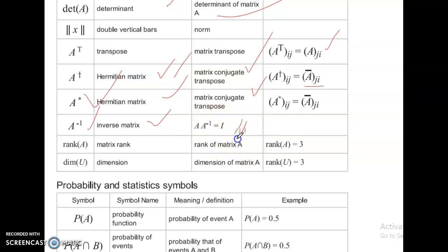Rank A. Matrix rank. Rank of matrix A. Rank A equal to 3. Dimension of U. Dimension of a matrix. Dim U equal to 3.